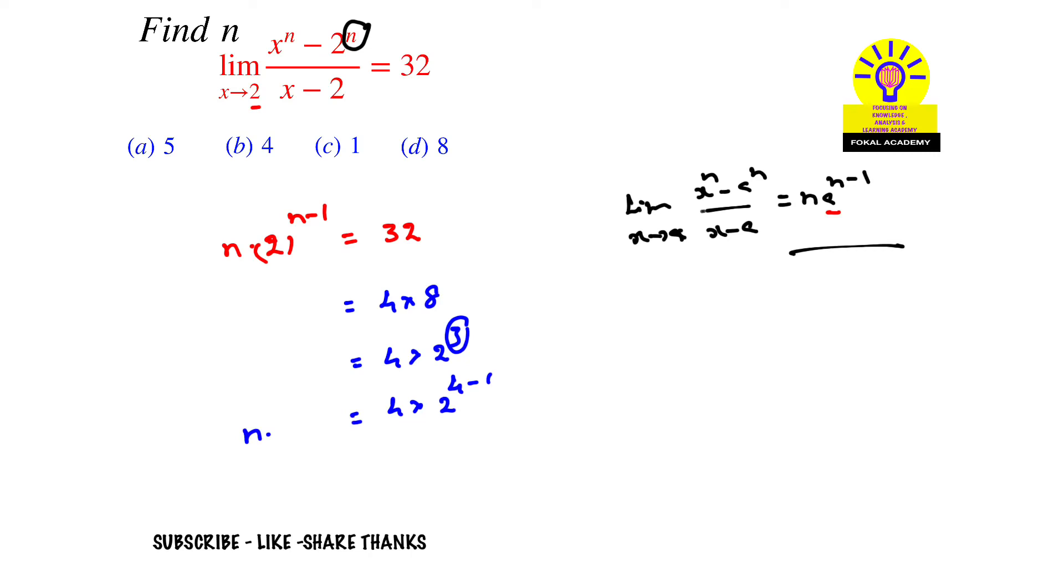This equals n × 2^(n-1). By comparing LHS and RHS, we get n = 4, and this is the required answer for the given problem. From the options, option B is the correct option. This is the process of simplification. Thanks for watching, please subscribe, like, and share. Thanks.